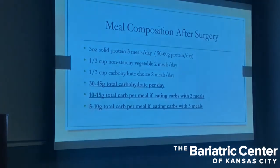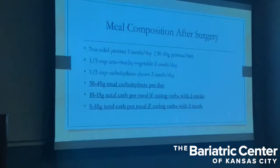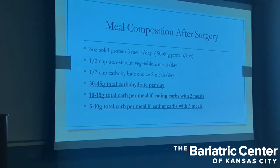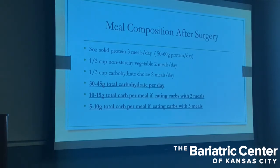Now let's incorporate this information into a bariatric diet. You've got three ounces of solid protein with all meals — eat that first, targeting 50 to 60 grams of protein per day. Then add the carbohydrates: about a third of a cup of non-starchy vegetables with two out of three meals, plus a third of a cup of carbohydrate with two out of three meals. In a nutshell, you want 30 to 45 grams of total carbohydrates per day. If eating carbs with two out of three meals, that's 10 to 15 grams per meal; with all three meals, more like 5 to 10 grams per meal. Either way, keep total carbohydrate at 15 grams or less per meal most of the time.